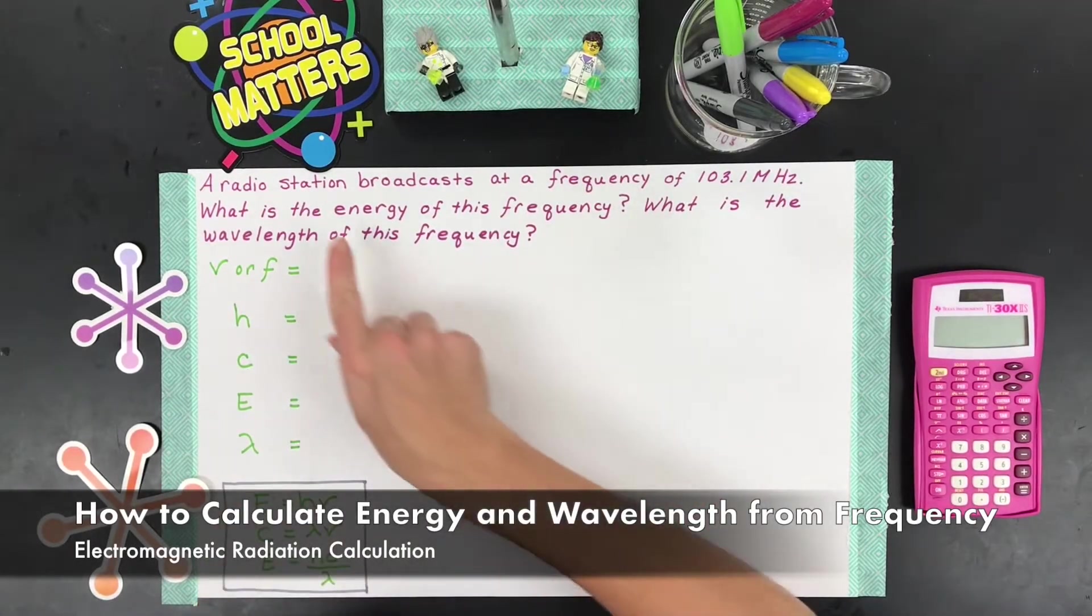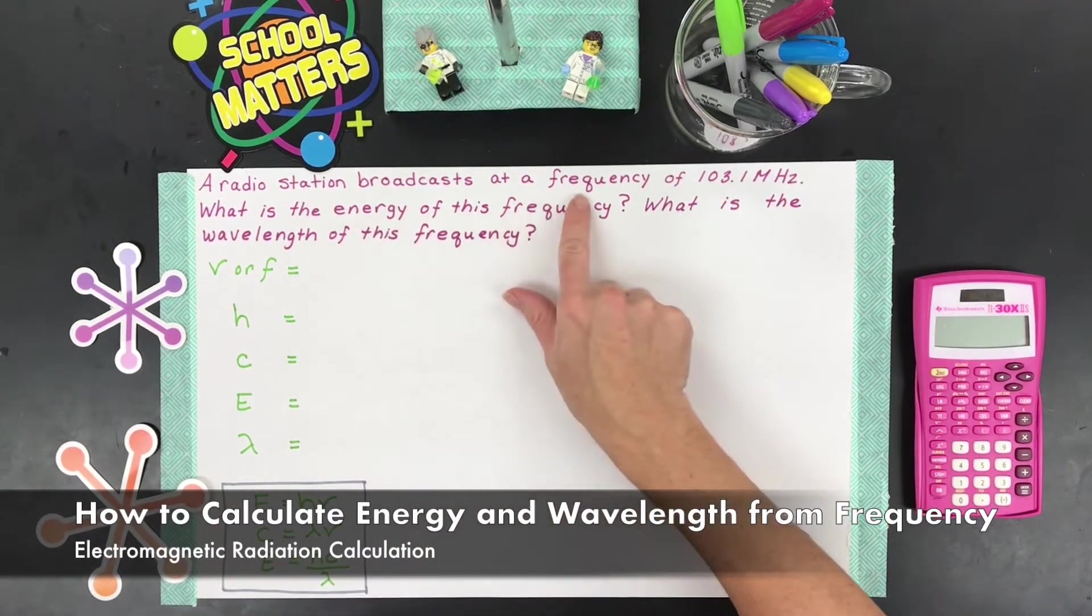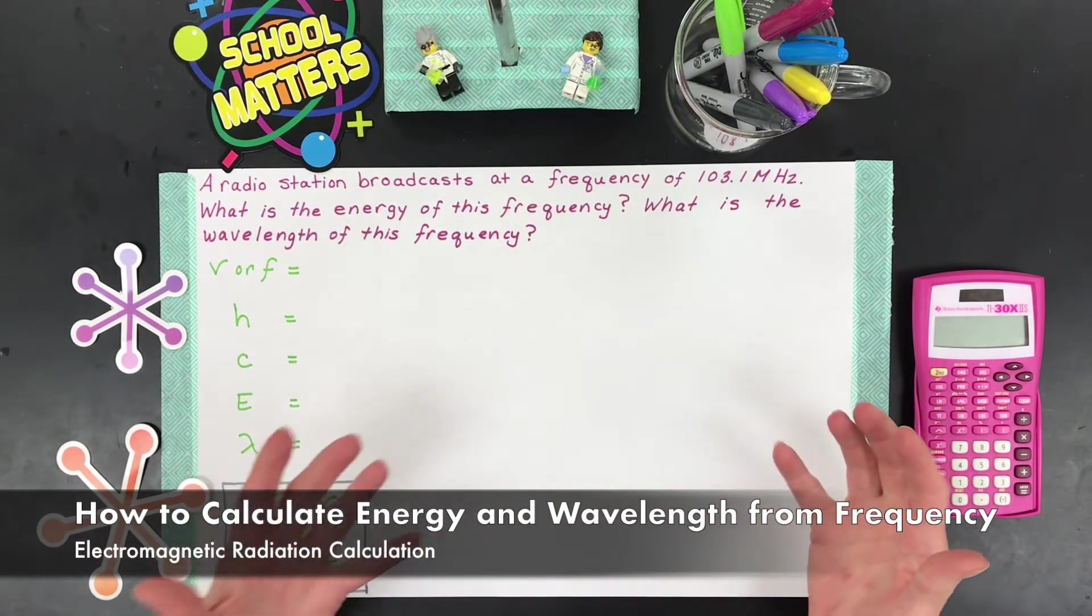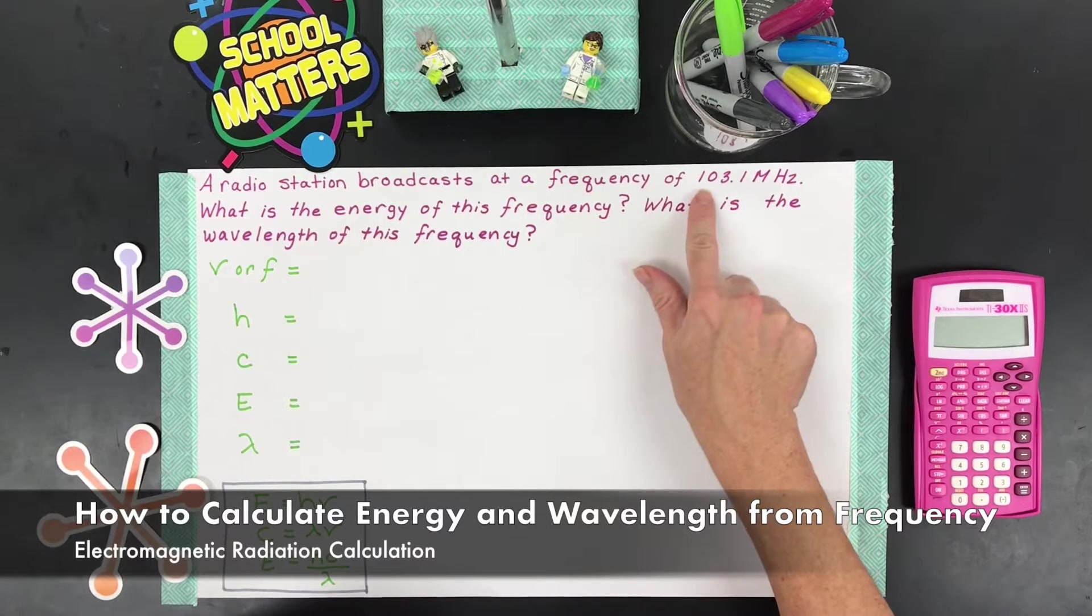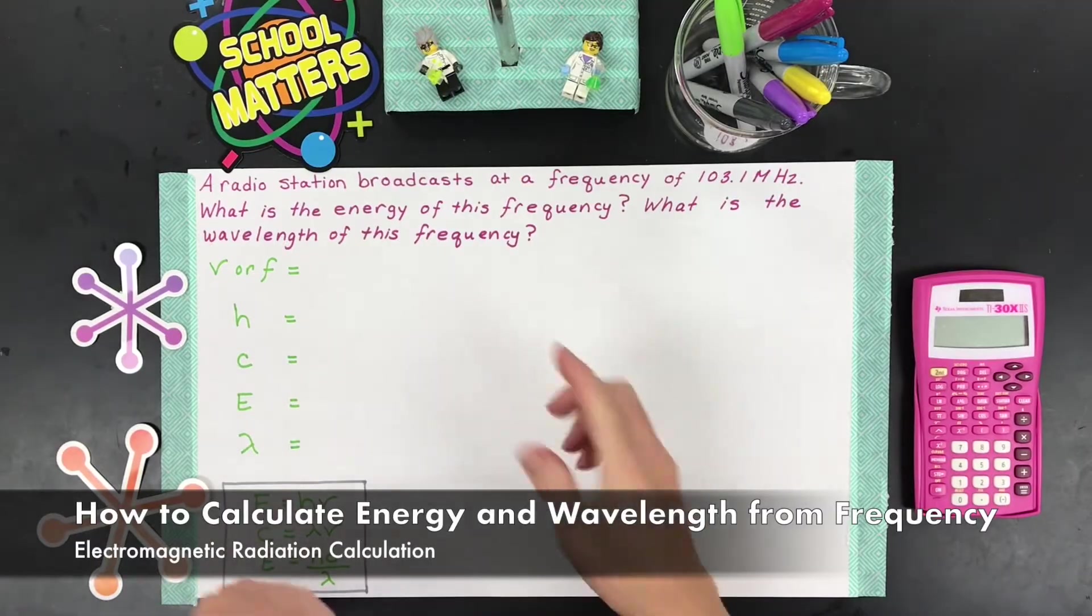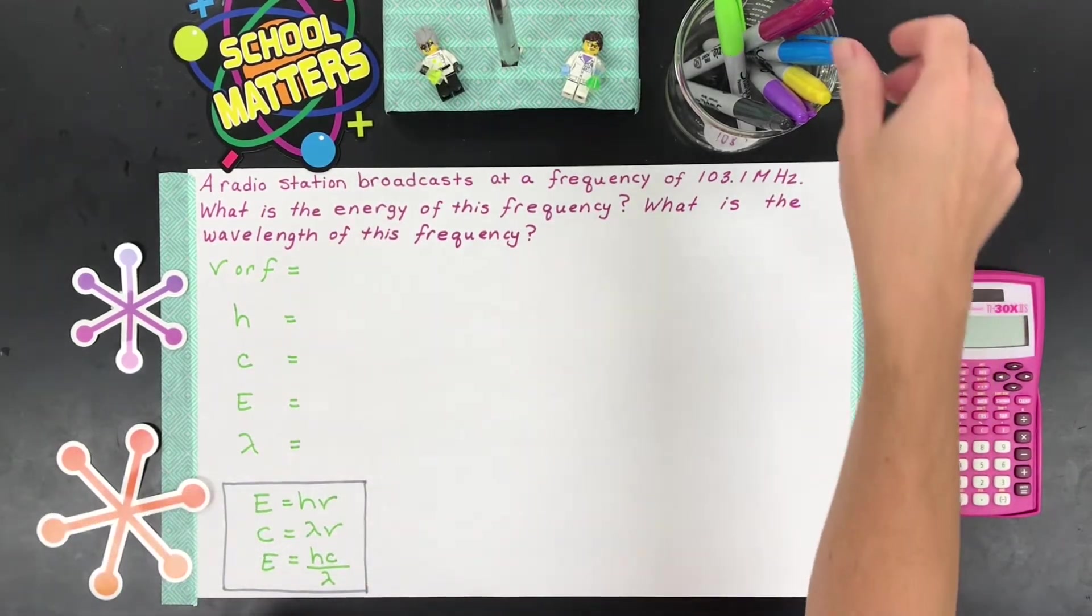In this video, I want to go through how you take a radio station's broadcasting frequency and find the energy and wavelength of that frequency. The frequency that I'm looking at is 103.1 MHz, so that's the radio station where I live, and what we're going to do is convert that into energy and wavelength.